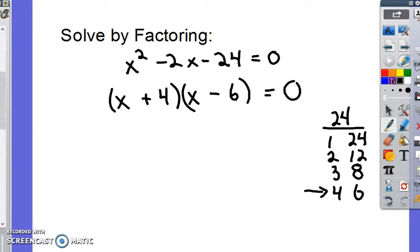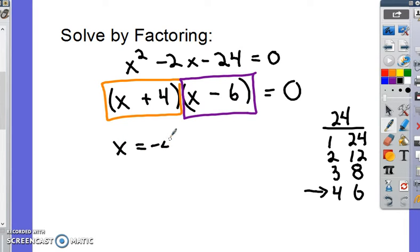Well, now I've got two things being multiplied together to get 0. One's in orange and one is in purple. If the orange thing were 0, x would have to be negative 4. Okay. If the purple thing were 0, x would have to equal 6. So now I've found my two solutions to that quadratic equation using factoring. You know, we're good.